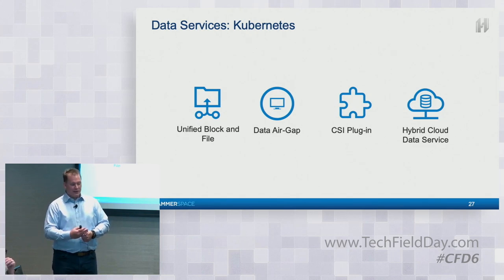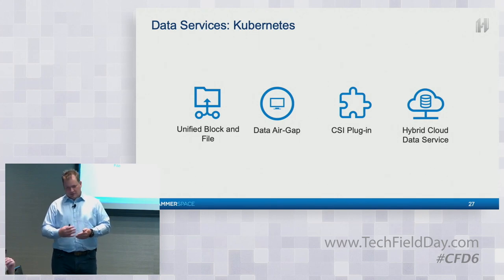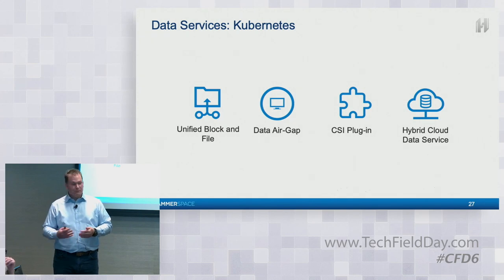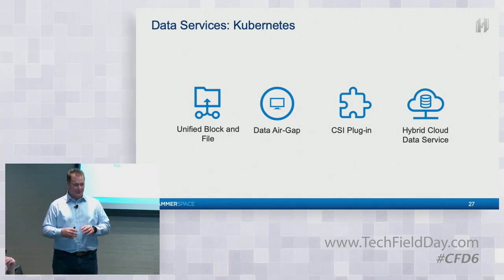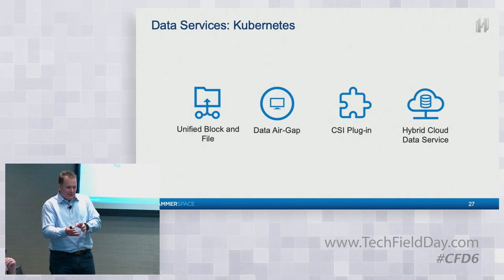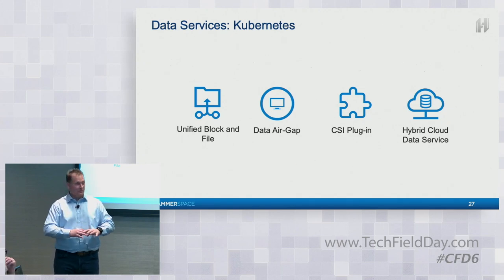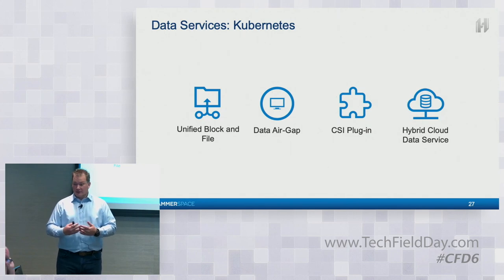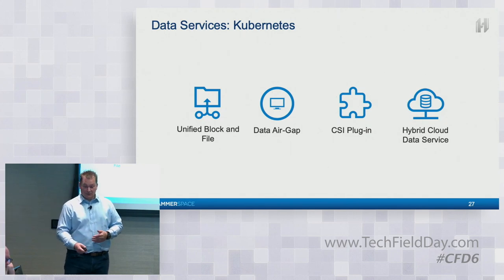You can start a pod on-prem and just start it in Amazon. You still need to get the data there that the pod may need, but it's really simple. You don't need to figure out whether you set up the replication relationship correctly or manually copied files. It's just automated — it sits there as part of the storage class and the PVs and PVCs you deploy.